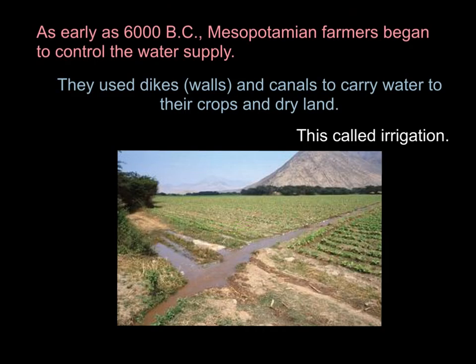As early as 6000 BC, Mesopotamian farmers began to control the water supply. They used dikes — meaning walls — and canals — meaning ditches — to carry water to their crops and dry land. This whole system is called irrigation. If you look at this picture, this main ditch is delivering water to the smaller arms or ditches, these smaller canals, to water their crops. This large ditch is coming from the river, and you can use the walls or dikes to block off the water when you don't want as much water out into your fields.